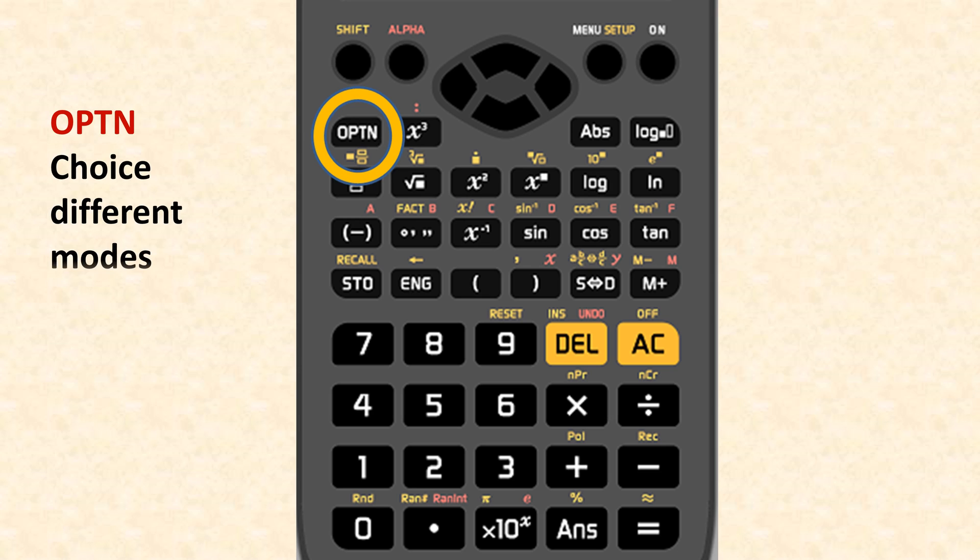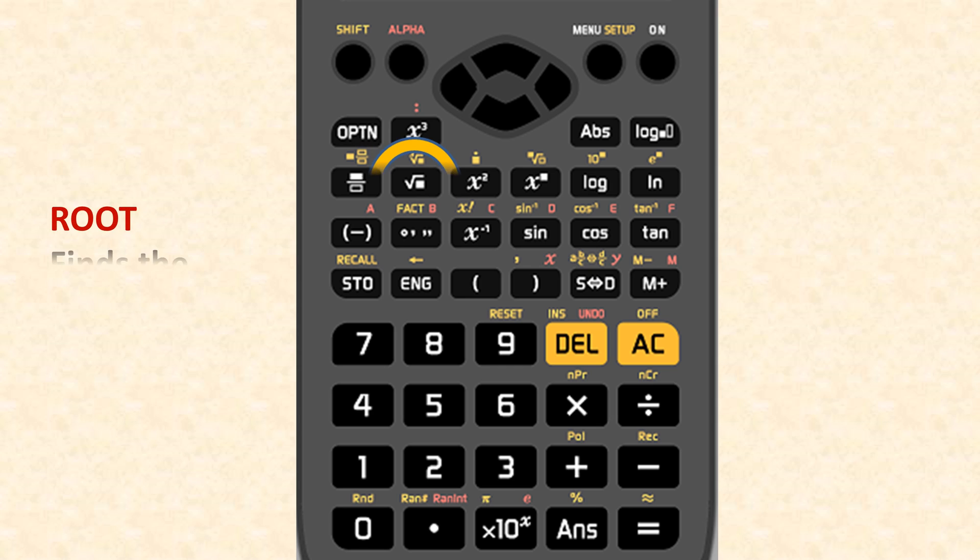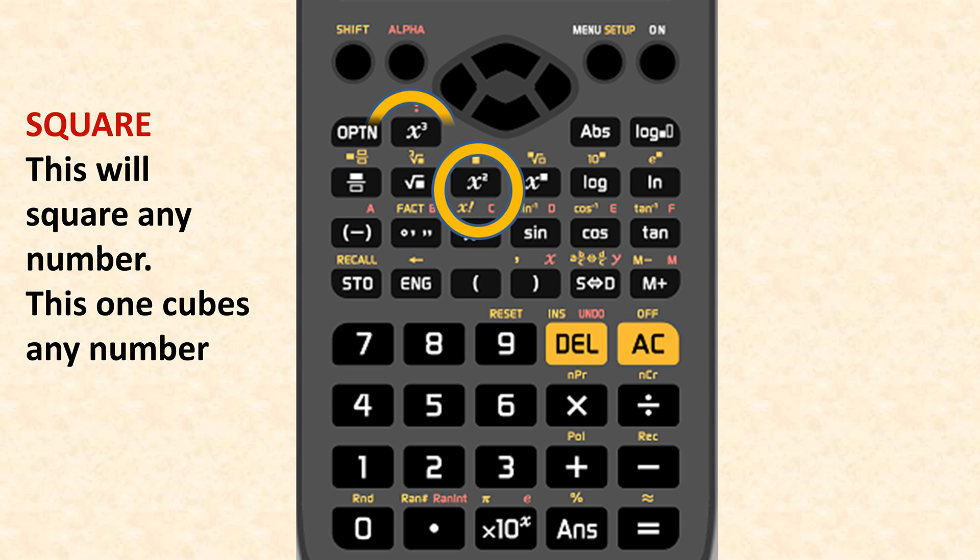This is an option button for more different modes. Here is your fraction for all fractions, and then you have root. This will find a square root of any number. This one will square any number, and this one will cube any number.